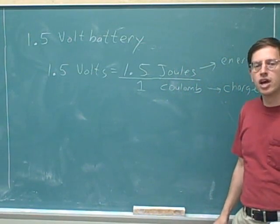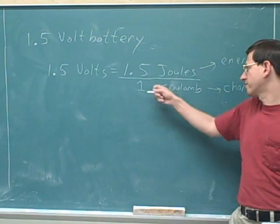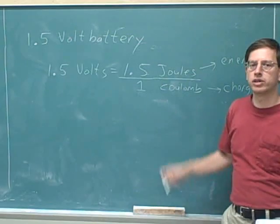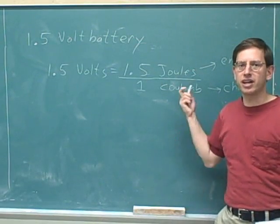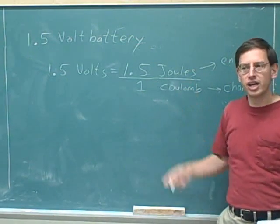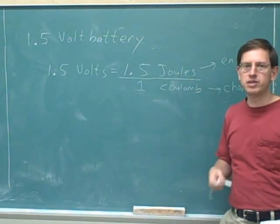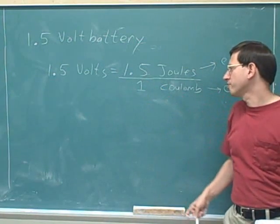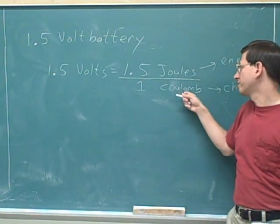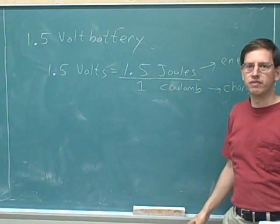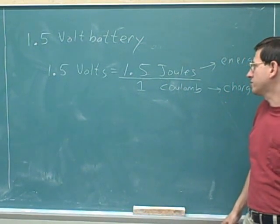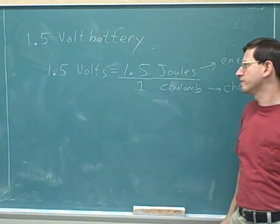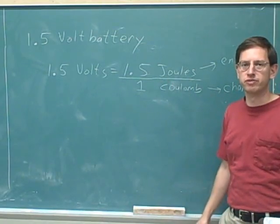Again, you can see how hypothetical this is. We're not saying that you're actually transferring one coulomb of charge through the battery — you could be transferring more or less. It's possible the appliance isn't even turned on, so no charge is being transferred and zero joules of energy are provided. But hypothetically, a 1.5 volt battery transferring one coulomb of charge would deliver 1.5 joules of energy. And now it shouldn't be too hard to figure out how much energy would be delivered if two or three coulombs were transferred.